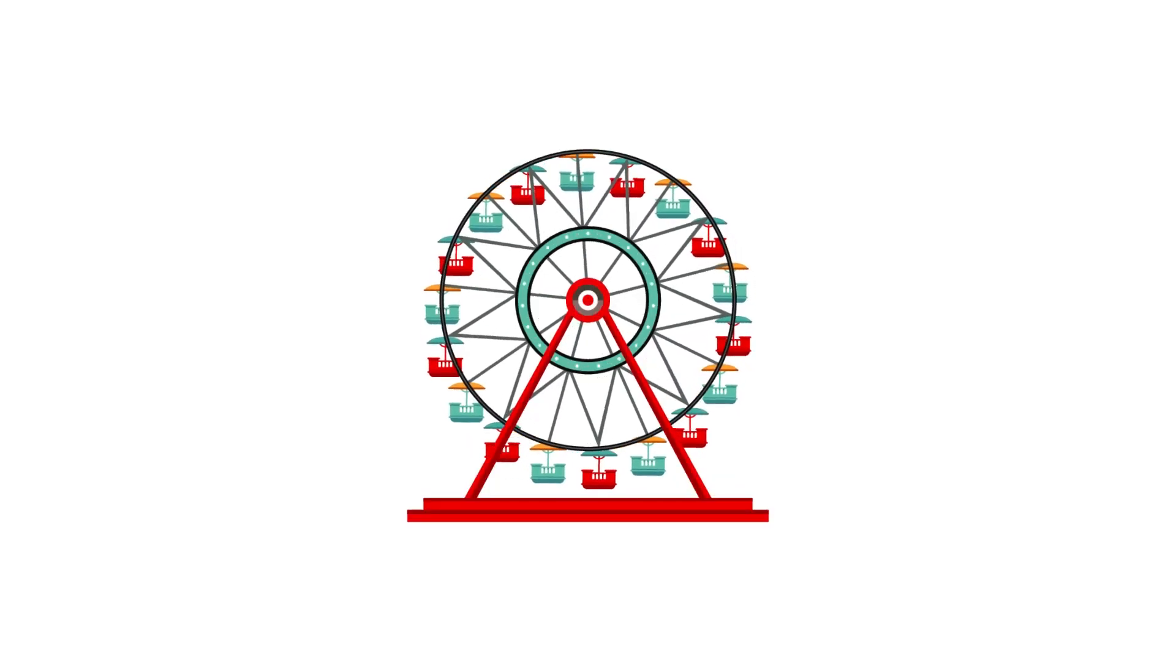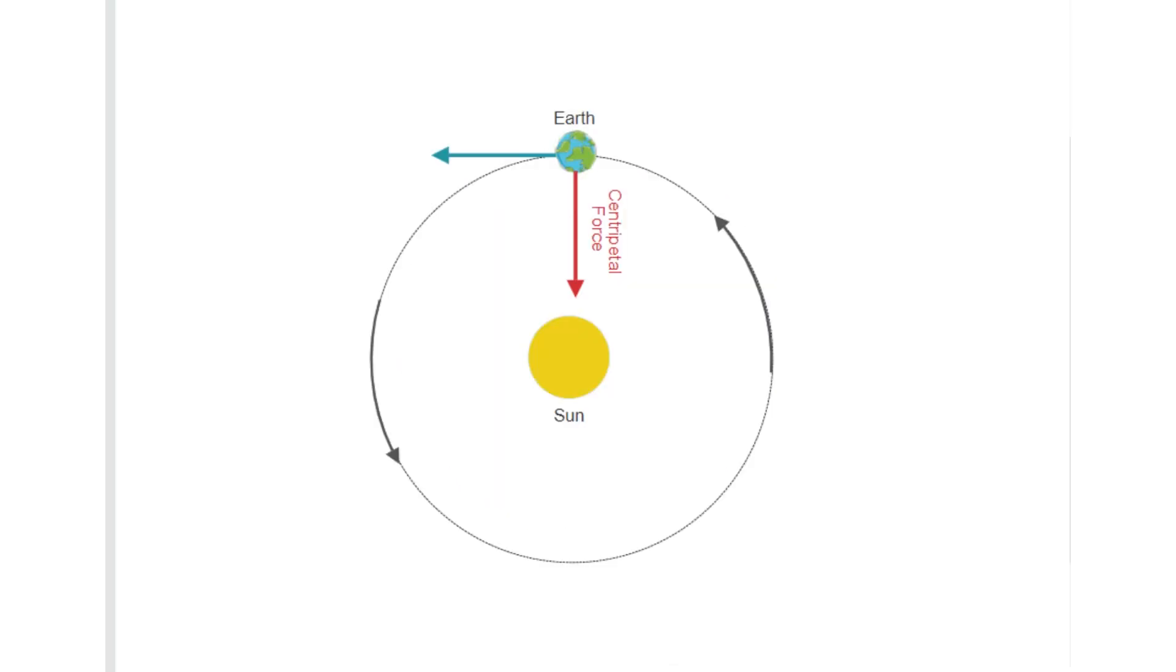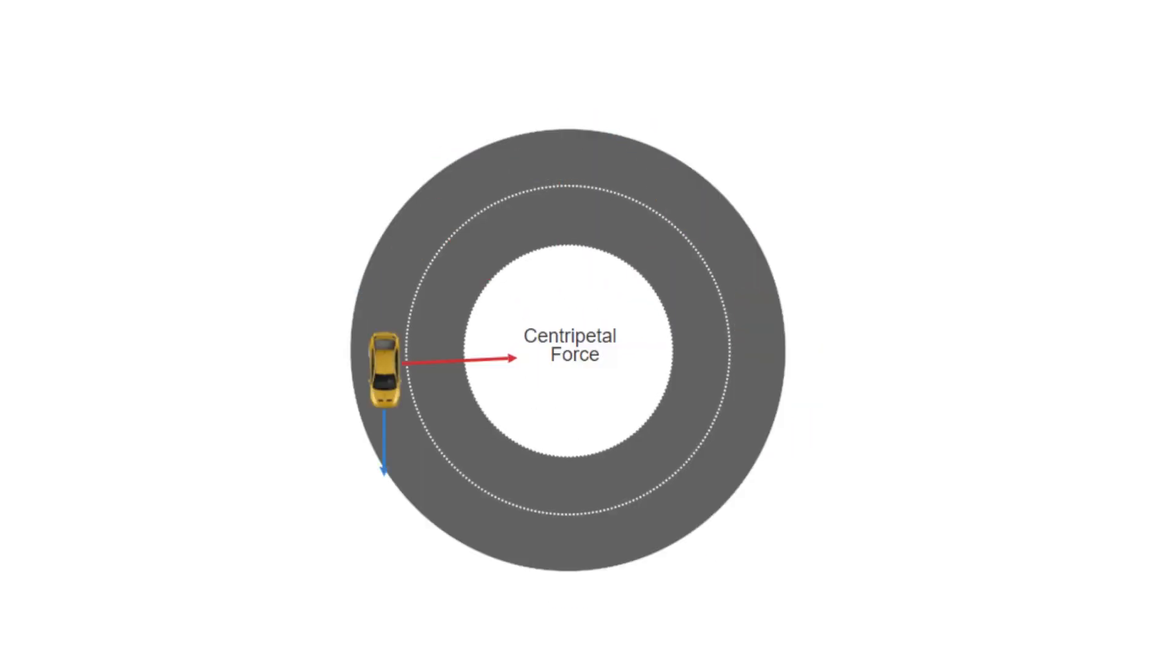Centripetal force is the force that keeps an object moving in a circle. It constantly pulls it towards the center. And when the force remains constant, the object experiences a consistent pull or acceleration toward the center, even if his speed stays the same.